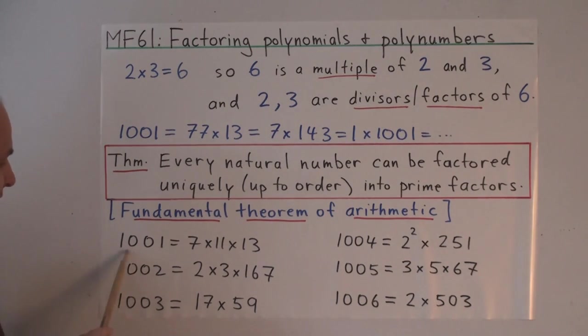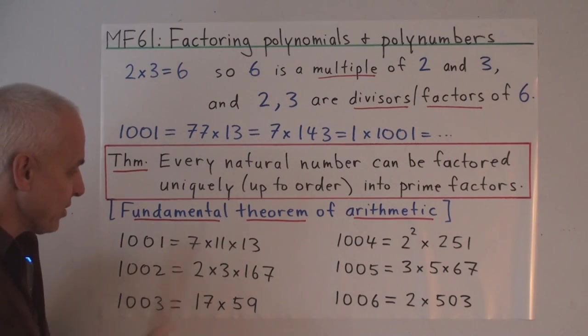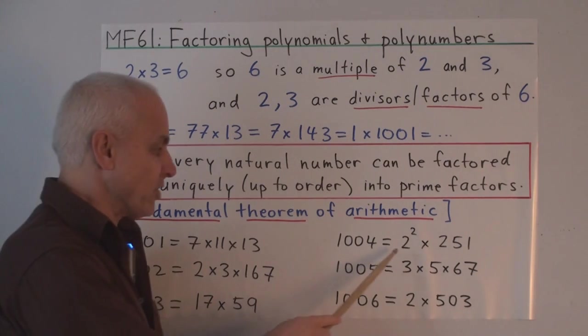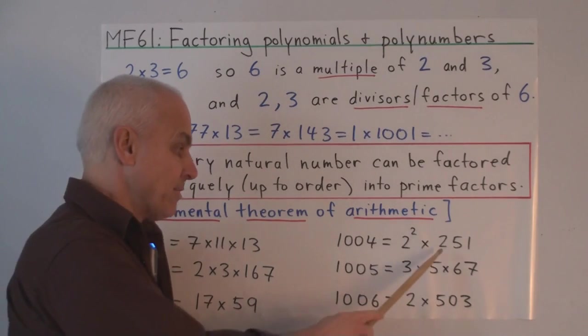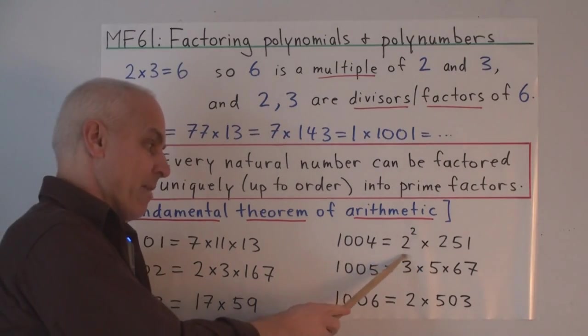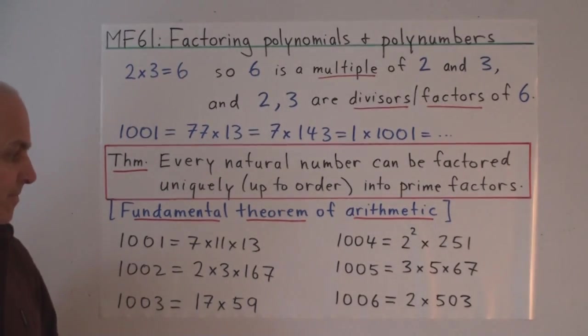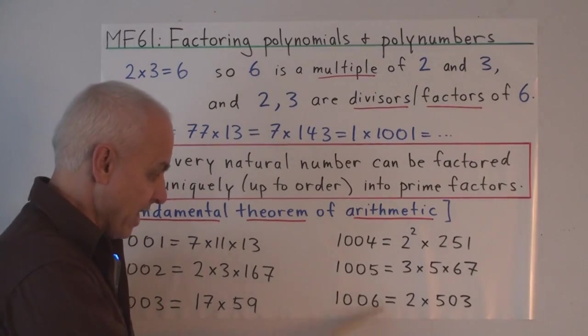So, for example, 1001 is 7 times 11 times 13. 1002 is 2 times 3 times 167. 167 is prime. 1003 is 17 times 59. 1004 is 2 squared times 251. There's no reason why a prime factor can't appear more than once in the factorization of a number. There's 1005, those are 1006.